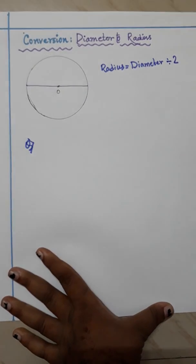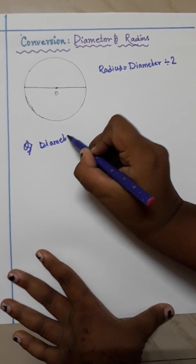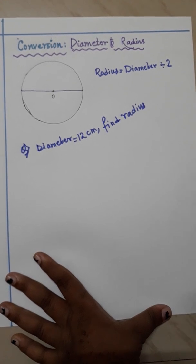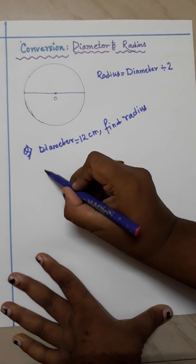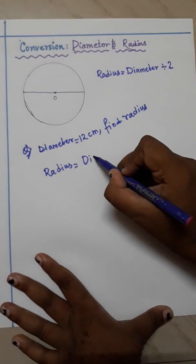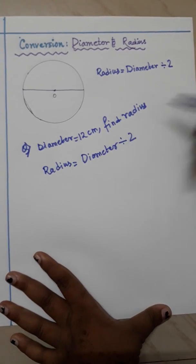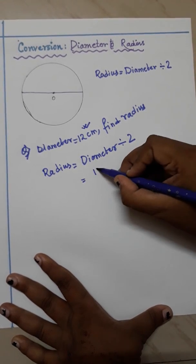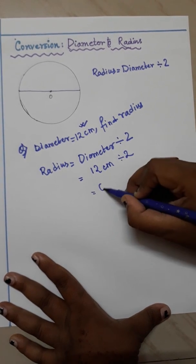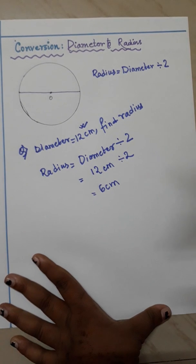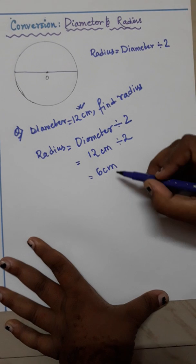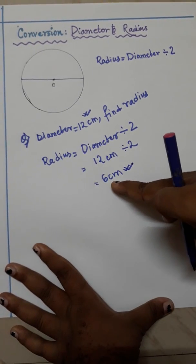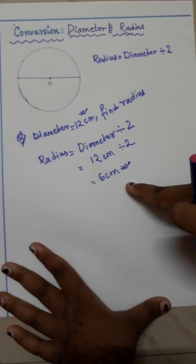Now if in a question diameter equals 12 cm, find radius. Here diameter is given and you have to find radius. You write: radius equals diameter divided by 2. The diameter is 12 cm, so 12 cm divided by 2 equals 6 cm. You can check whether your answer is right: double of radius is diameter, and double of 6 is 12, which is given here — so our answer is correct.